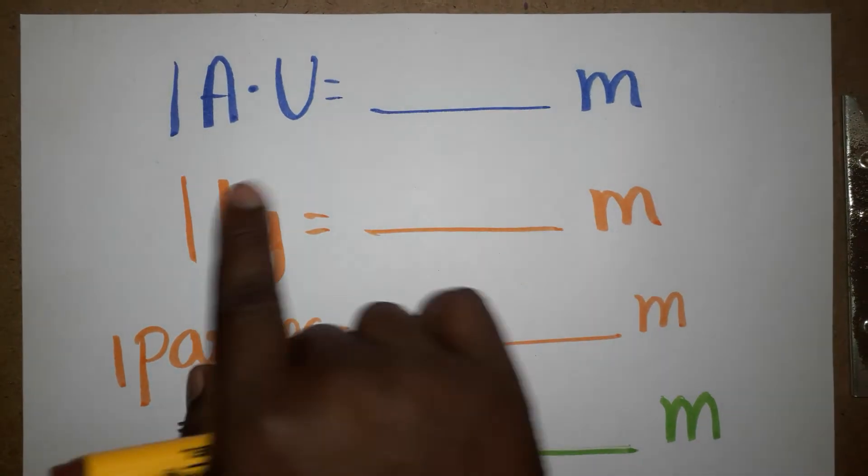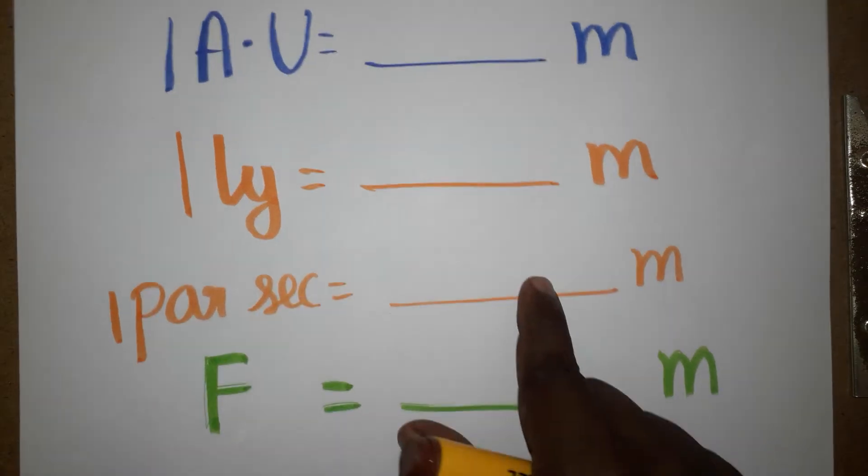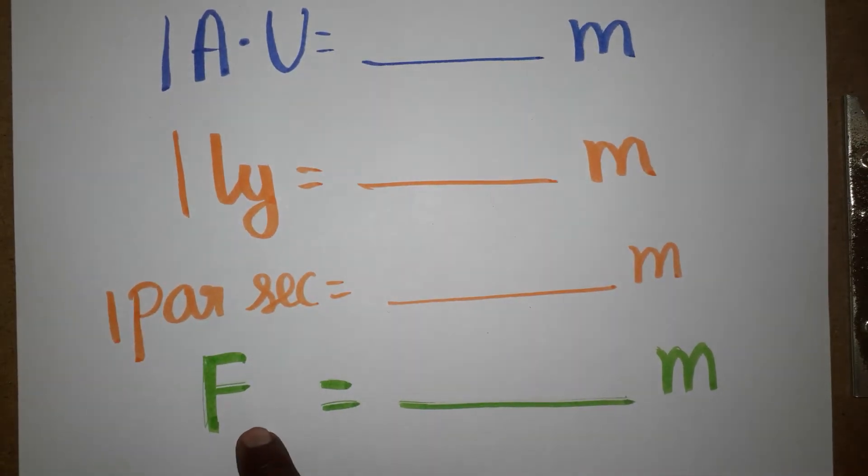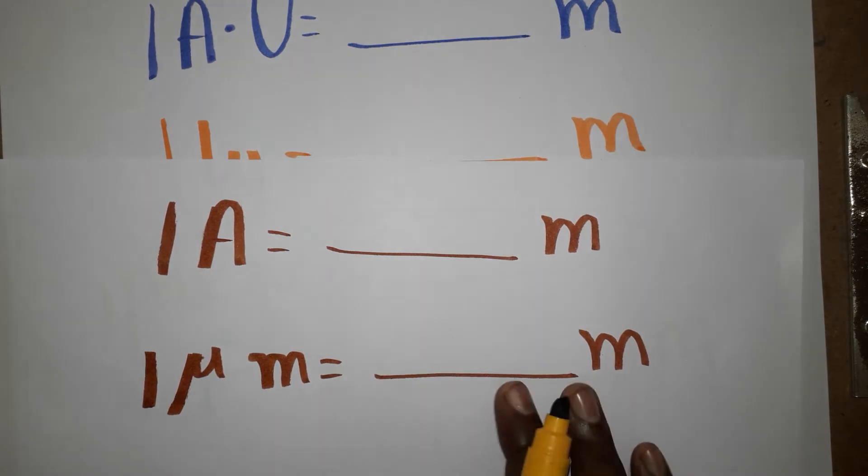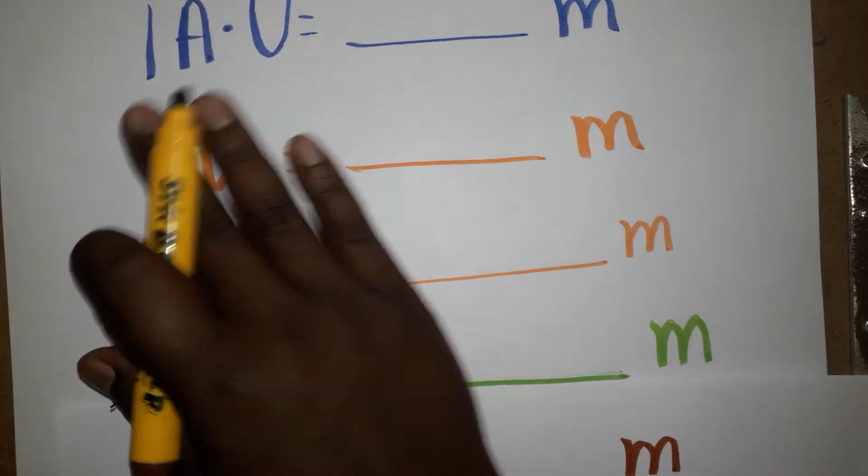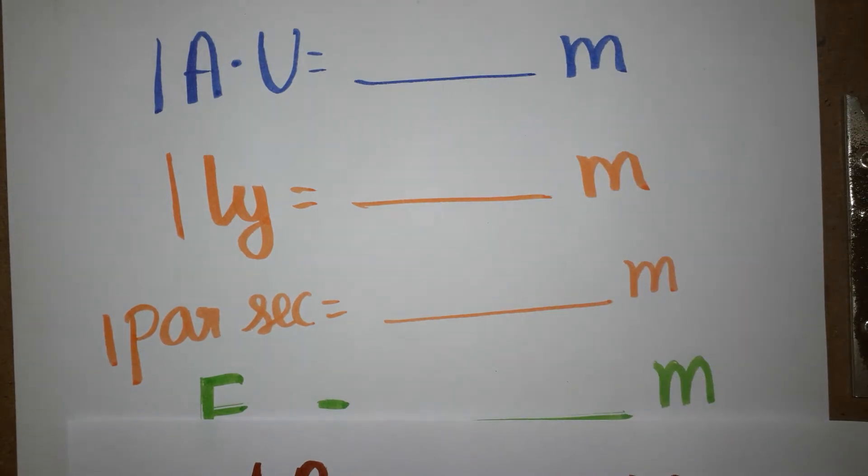Today we are going to see different units to the meter. One is the angstrom unit, another one is a light year, another one is a parsec, and micrometer. These are the units we are going to learn how to convert to meters. We will see one by one explanation.